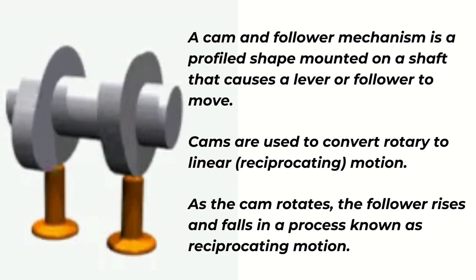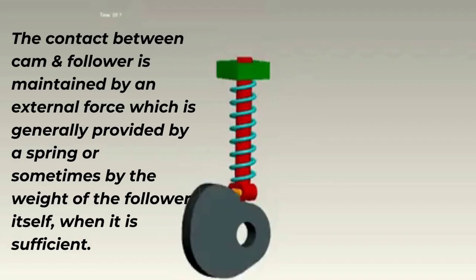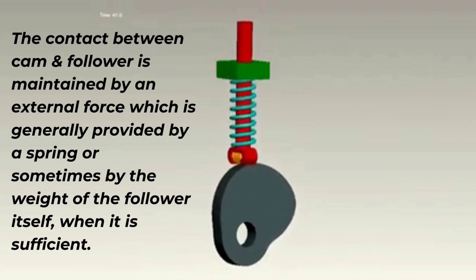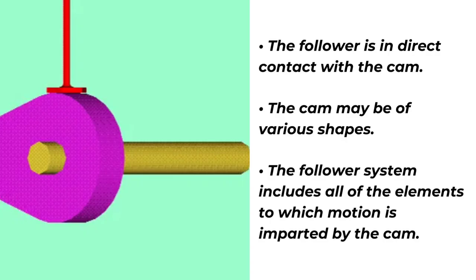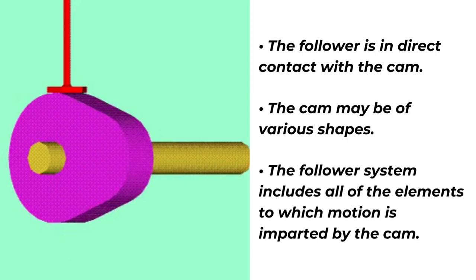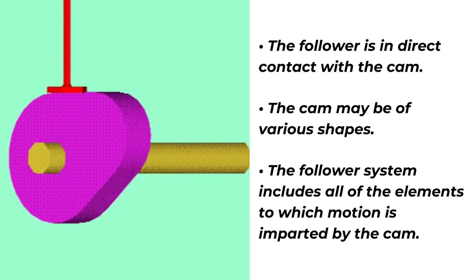As the cam rotates, the follower rises and falls in a process known as reciprocating motion. The contact between cam and follower is maintained by an external force, which is generally provided by a spring, or sometimes by the weight of the follower itself when it is sufficient. The follower is in direct contact with the cam. The cam may be of various shapes. The follower system includes all of the elements to which motion is imparted by the cam.